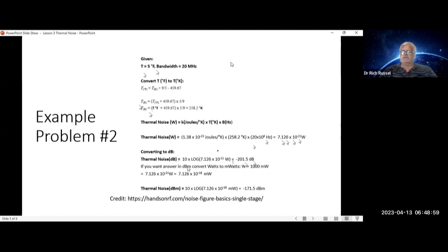Now, some people like these answers in dBm. If you want that, then that's what you're going to do is convert your watts number to milliwatts, and a watt is equal to 1,000 milliwatts. So that means that 7.126 times 10 to the minus 21 watts is equal to 7.126 times 10 to the minus 18 milliwatts. So thermal noise is equal to the log of that in milliwatts times 10. That gives you minus 171.5 dBm.